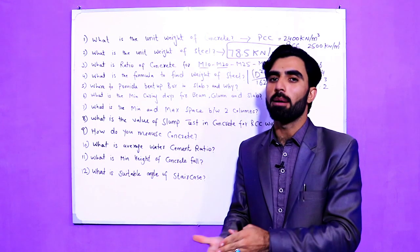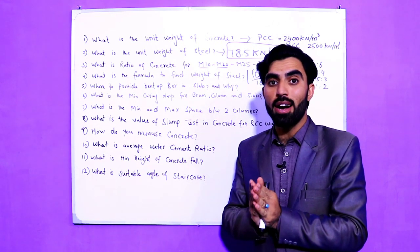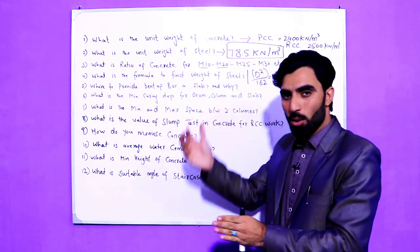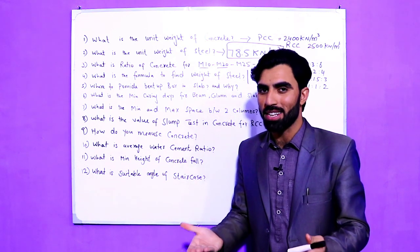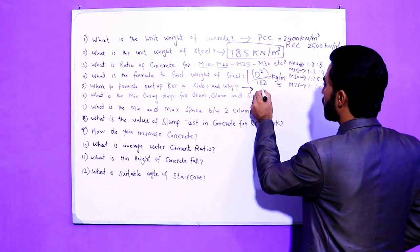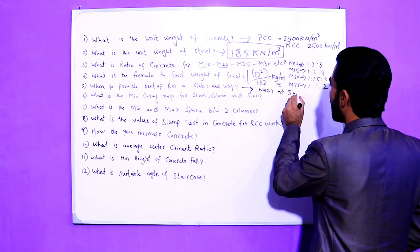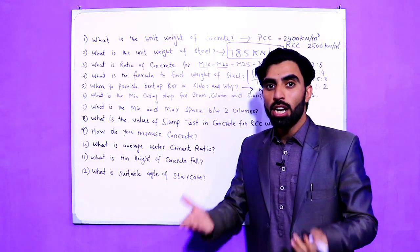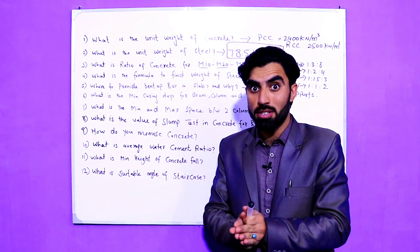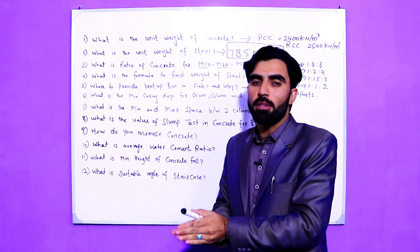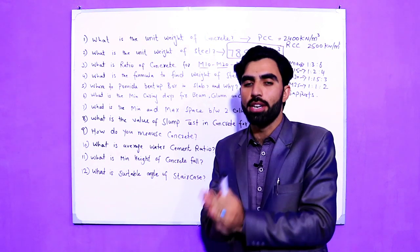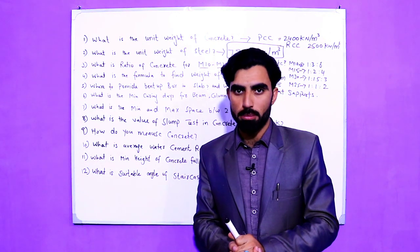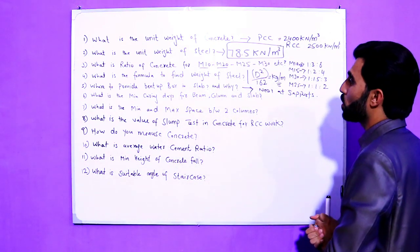The fifth question is: where do we provide bent-up bars in an RCC slab? Bent-up bars are provided near the support. Why? To resist shear stresses, because shear stresses are maximum at the end of the support. Therefore we bend the bar near the support to resist shear stresses.